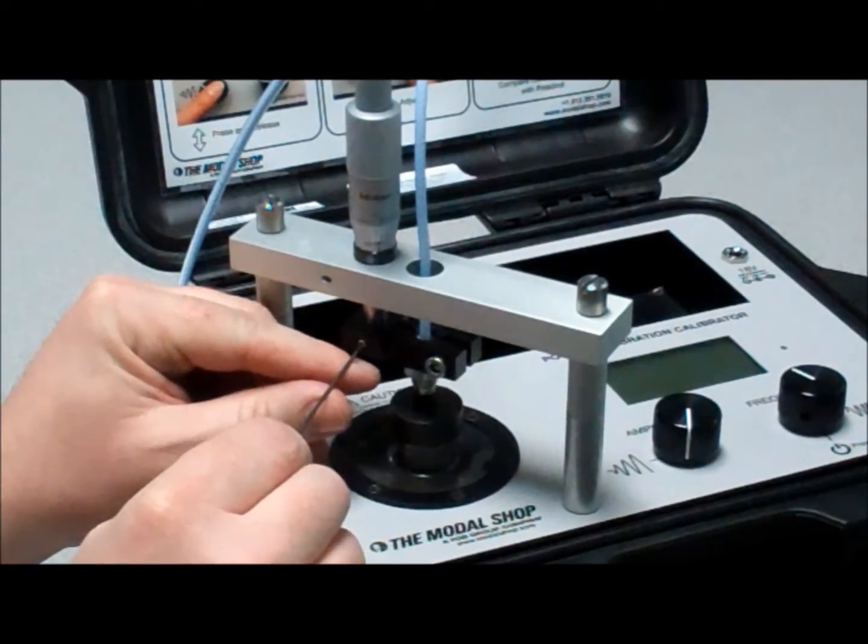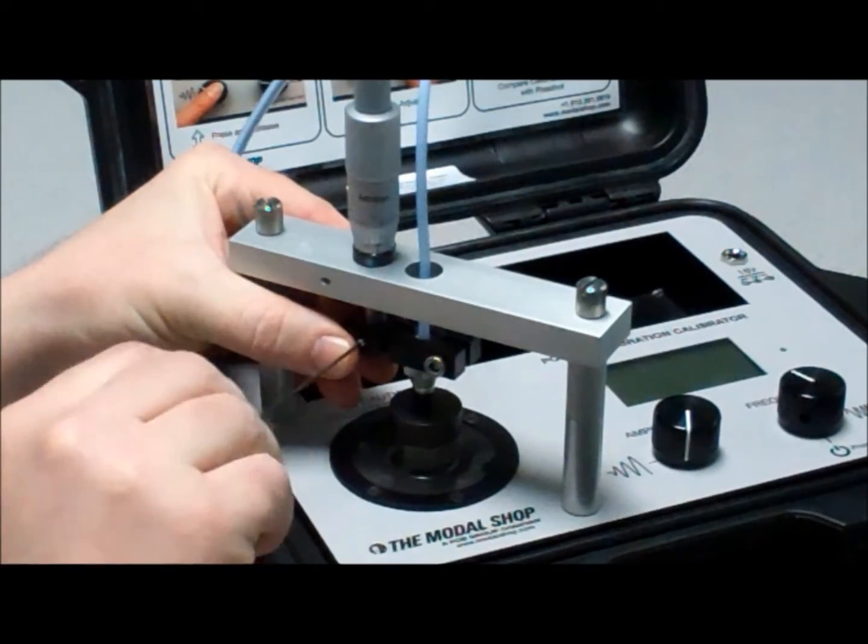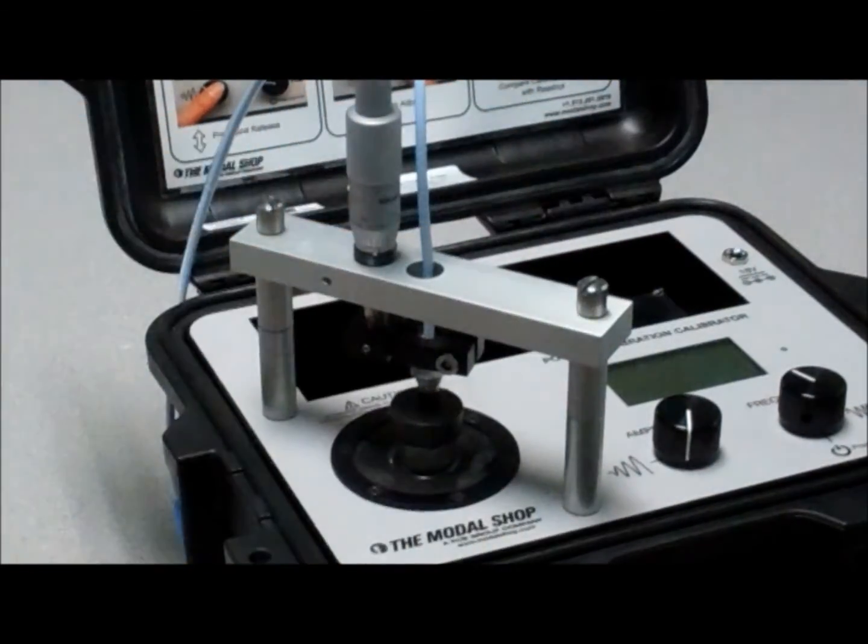Now set the height of the Prox Probe to the target using a hex key to tighten the set screw against the micrometer. The Proximity Probe should be nearly in contact with the target.